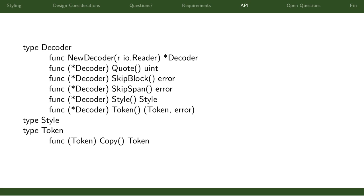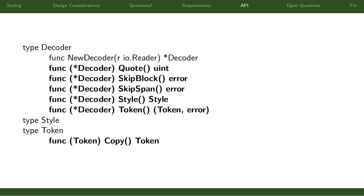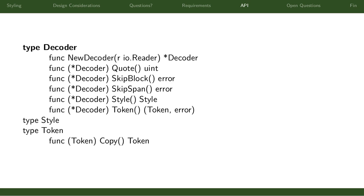The library itself has a pretty simple, straightforward API. We have three types, one function, and six methods. The most important thing is the decoder type - that's what you create to actually parse a document, figure out what the styles are. You create it with a constructor. If you're not familiar with Go, a reader is just an interface for anything that lets you read bytes - similar to Java or Python - so it might be a network socket, a file, or a reader wrapping a string or byte slice.